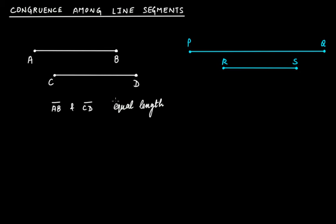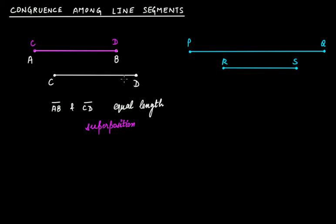Since they are equivalent, if you try to apply the method of superposition, it means that if you try to cover line segment AB with line segment CD, what will happen is C will come here and D will come here. We have just superposed AB with CD, so C will cover A and D will cover B. Therefore it will be covered completely since they were of equal length.